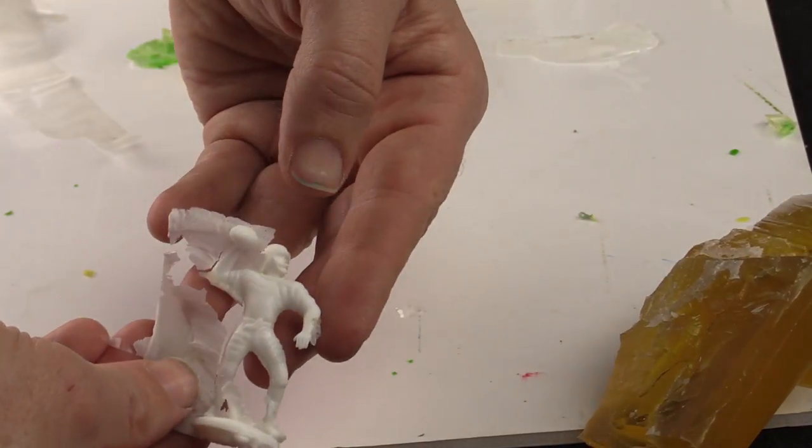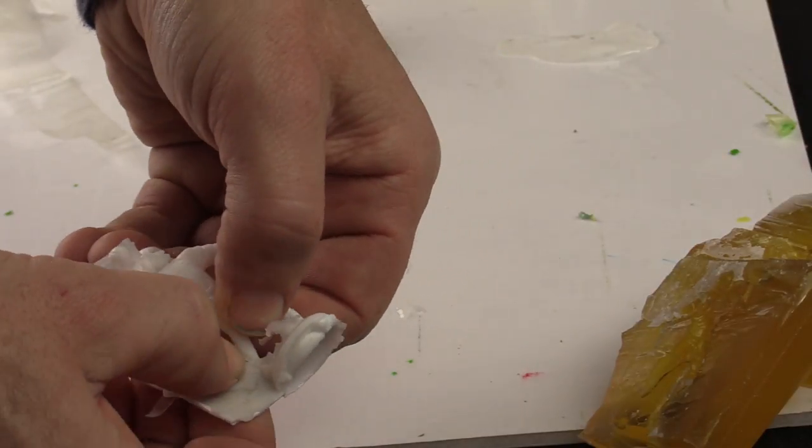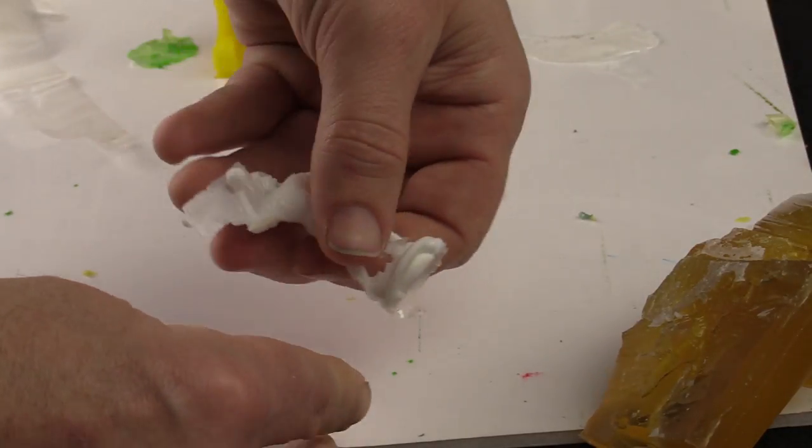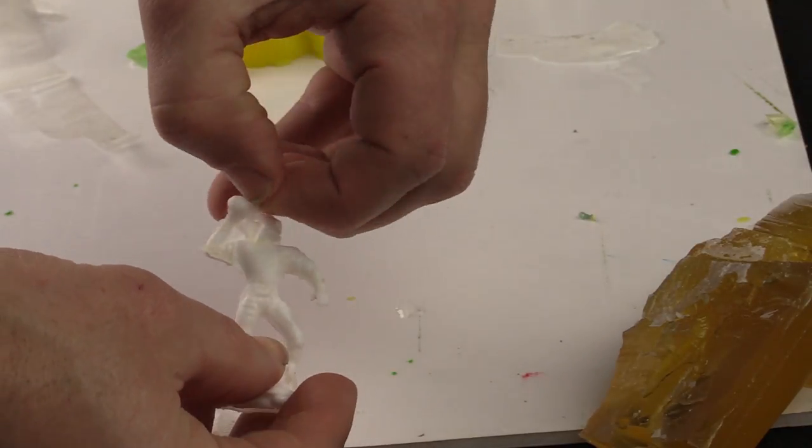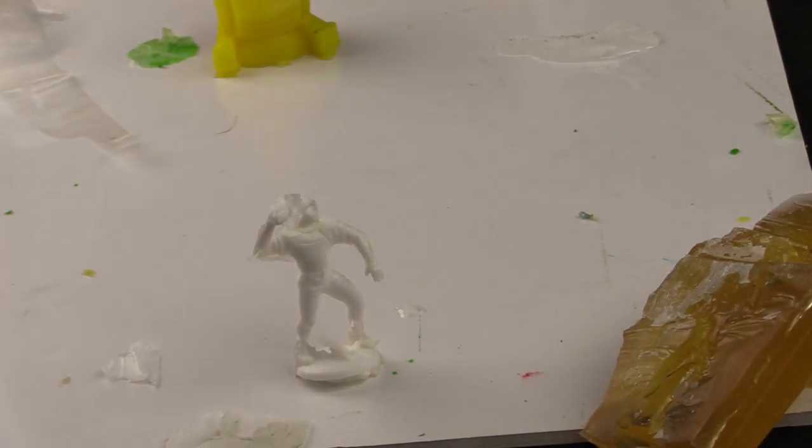And here we are. The casting is complete. At this point, you can cast another or you can remelt the mold and make another shape. If you want to keep the mold for long periods of time, wrap it in a plastic wrap or a Ziploc bag.